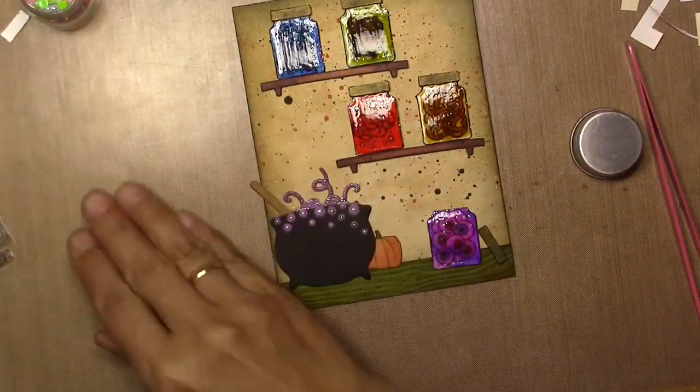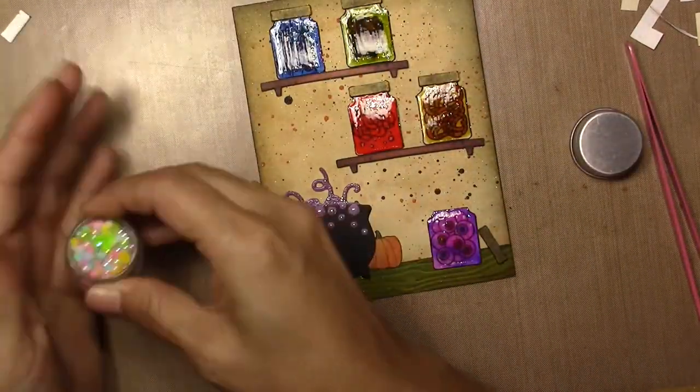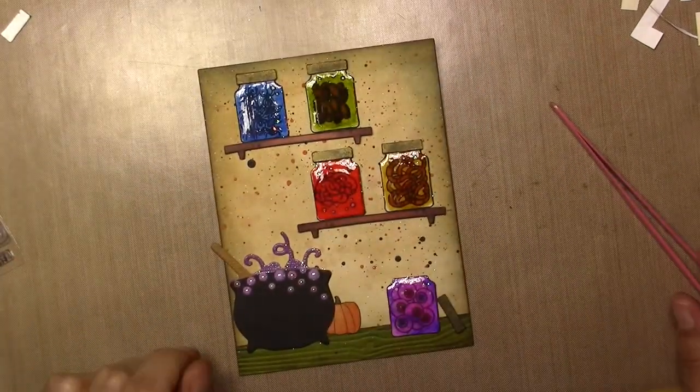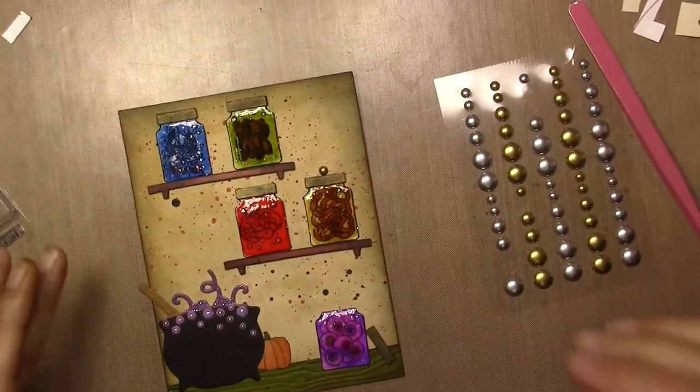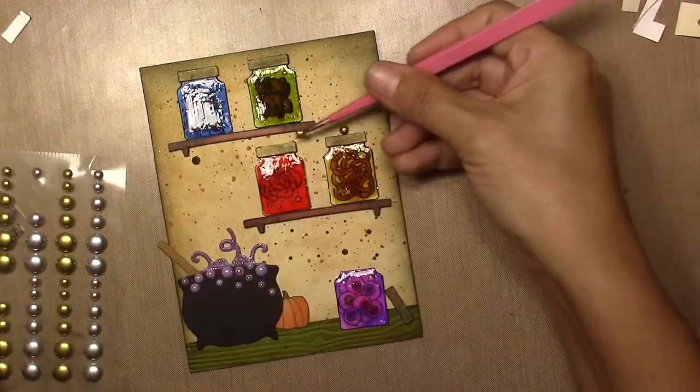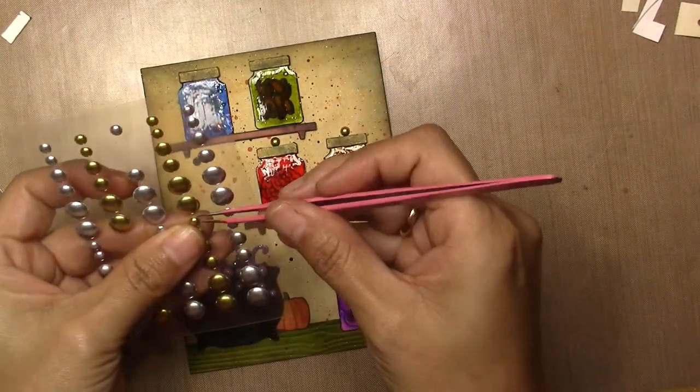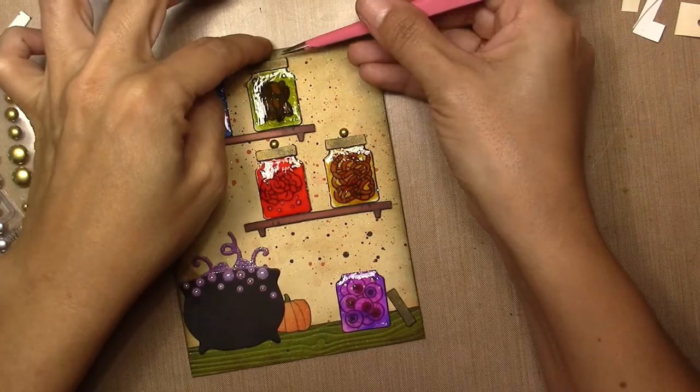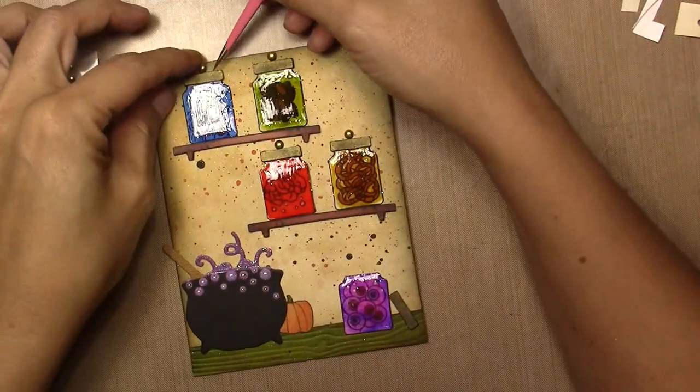As you see here I add to the cauldron little flat back pearls to pretend that they're bubbles. After I finished doing the whole card I think I want to add more bubbles to look like a cluster of bubbles.